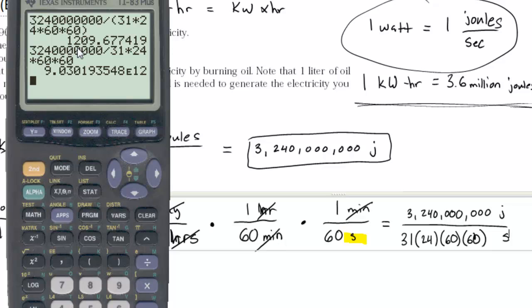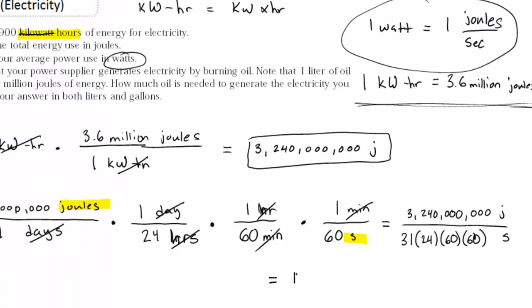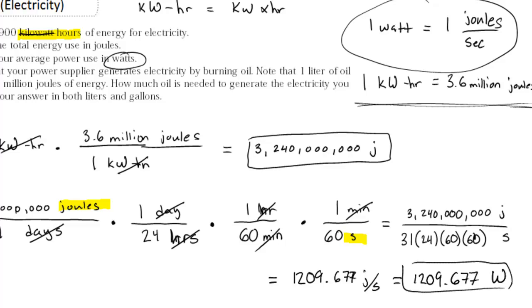So 1209.677. So 1209.677 joules per second. But remember, 1 joule per second is equal to 1 watt, so this is 1209.677 watts. So I got that answer, that's B.